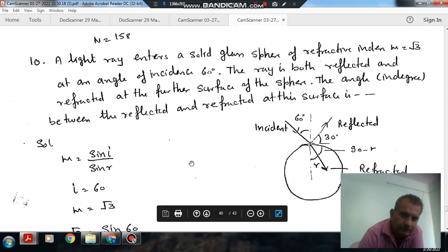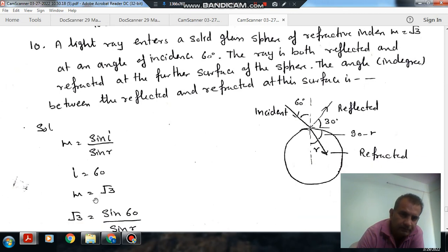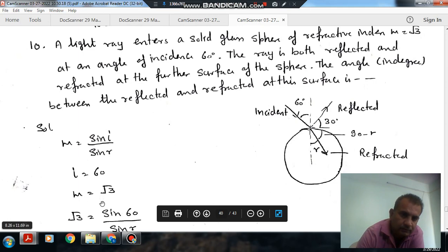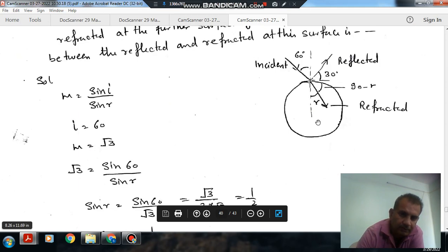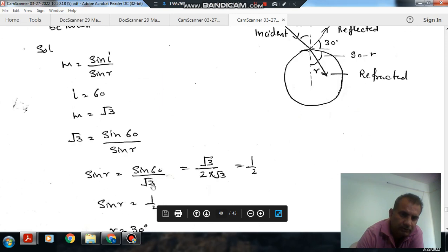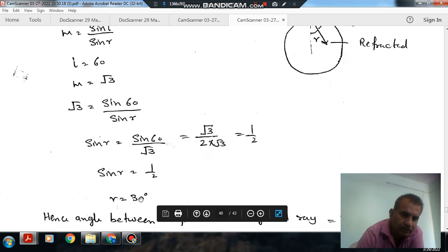This is your reflected ray and this is your refracted ray. Mu is given as sin i by sin gamma. So sin i, where i is 60 degrees, and gamma is what we need. This is given as root 3, so from root 3 you can find sin gamma. Sin gamma comes out as sin 60 by root 3, or root 3 by 2 root 3, which is 1 by 2.